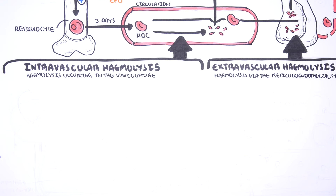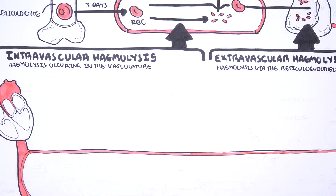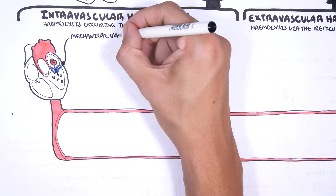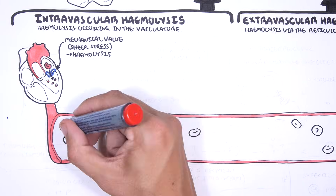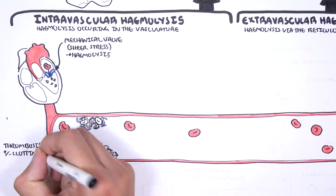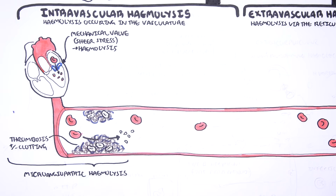Causes of intravascular hemolysis include mechanical valve hemolysis — red blood cell destruction due to shear stress trauma from a mechanical heart valve. In pro-coagulative or pro-thrombotic states, such as in microangiopathic hemolysis, red blood cells passing through clots have their membranes damaged and burst. Examples of microangiopathic hemolysis include thrombotic thrombocytopenic purpura, hemolytic uremic syndrome, and disseminated intravascular coagulation. In these patients, fragmented red blood cells can be found in the urine.